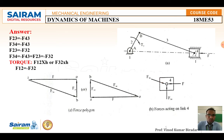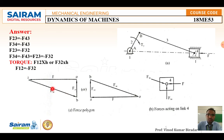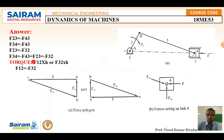You can start the force polygon from any of the three forces and get the same result. The force polygon is formed by 0 to A, A to B, and B to O. To calculate F34, measure it from the scale and multiply by the scale factor to get the value. That F34 or F32 value is then substituted in the torque equation: torque equals force times distance.